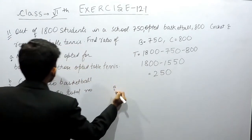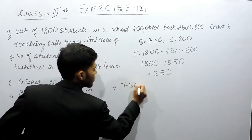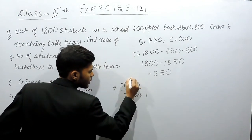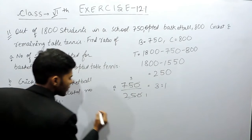Now according to part A, number of students who opted for basketball, which is 750, to those who opted for table tennis, that is 250. This will be 3 times, so this will be equals to 3 ratio 1.